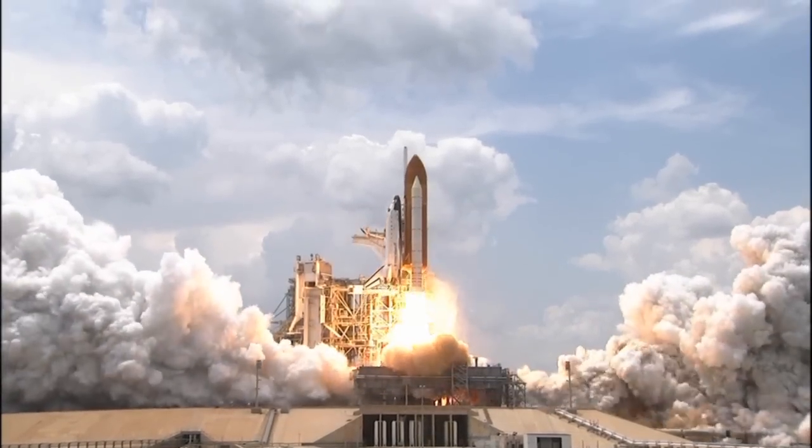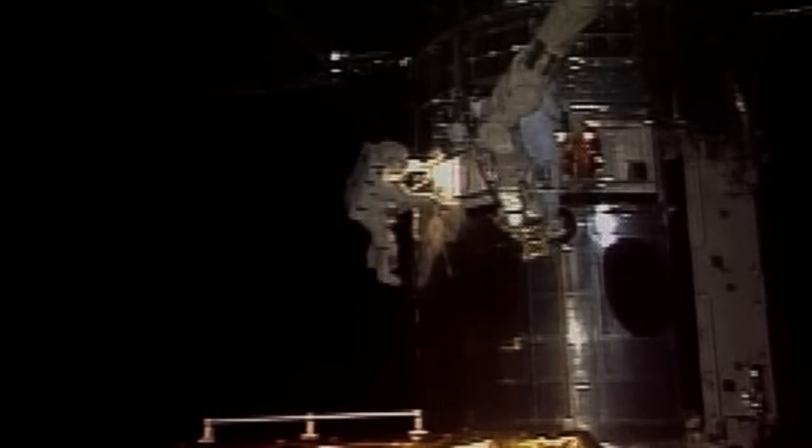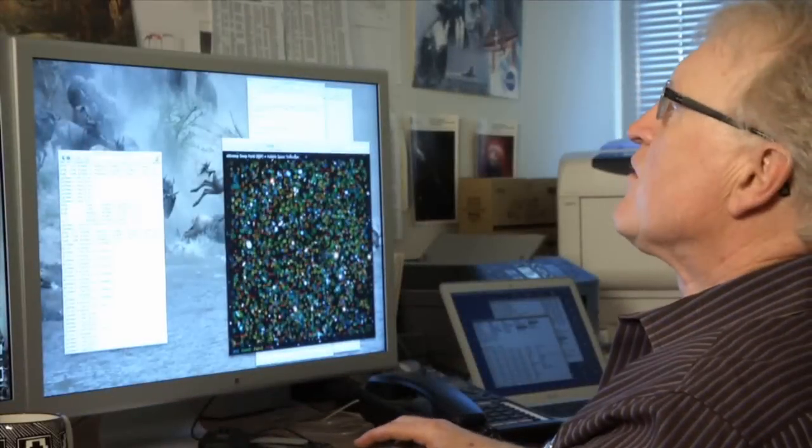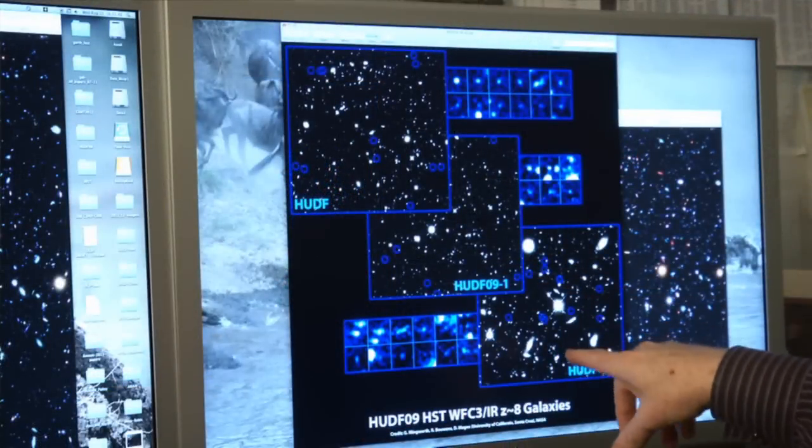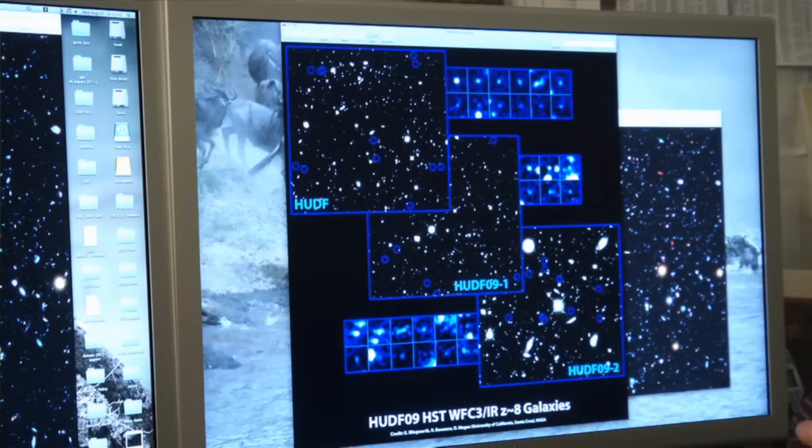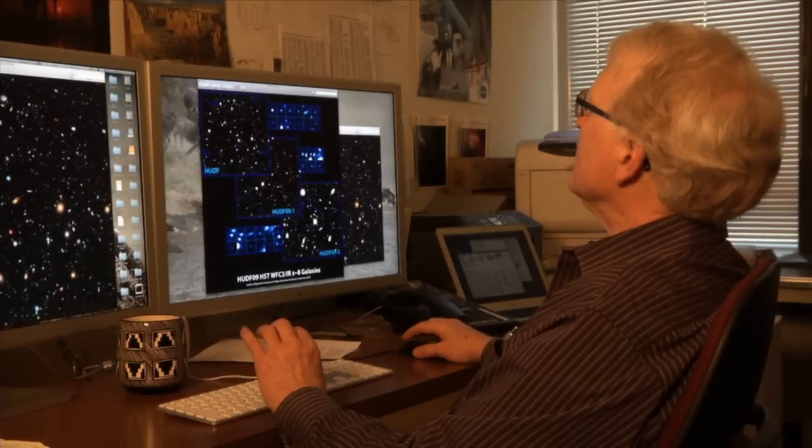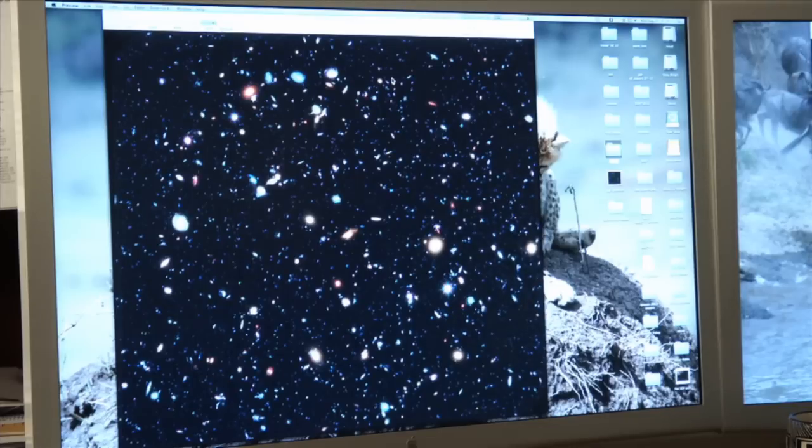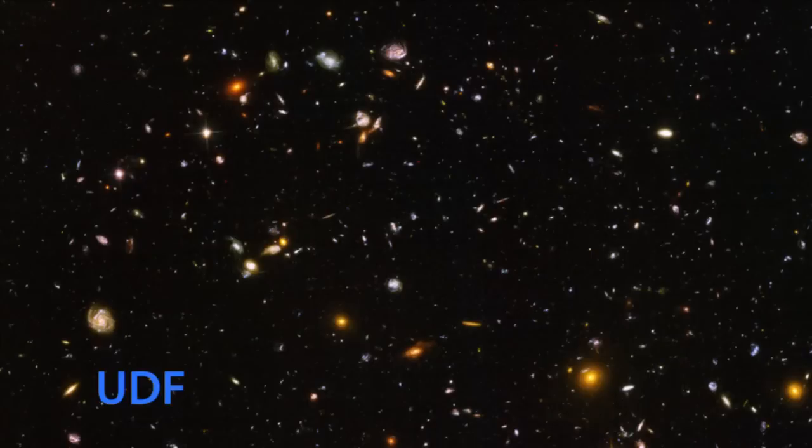Liftoff of Space Shuttle Atlantis. But when the Hubble was serviced for the last time in 2009, scientists saw a way to expand our vision of the universe even further by using the new infrared camera. We could push out to earlier times. We could find even more distant objects than we'd ever been able to do before. That new research, combined with the Ultra Deep Field's use of visible light, is now called the Extreme Deep Field.